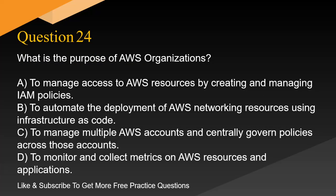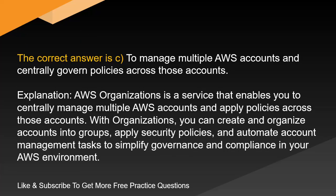Question 24. What is the purpose of AWS Organizations? A. To manage access to AWS resources by creating and managing IAM policies. B. To automate the deployment of AWS networking resources using infrastructure as code. C. To manage multiple AWS accounts and centrally govern policies across those accounts. D. To monitor and collect metrics on AWS resources and applications. The correct answer is C: To manage multiple AWS accounts and centrally govern policies across those accounts.